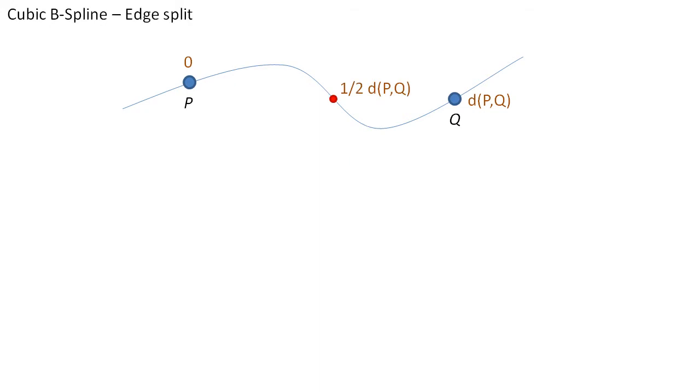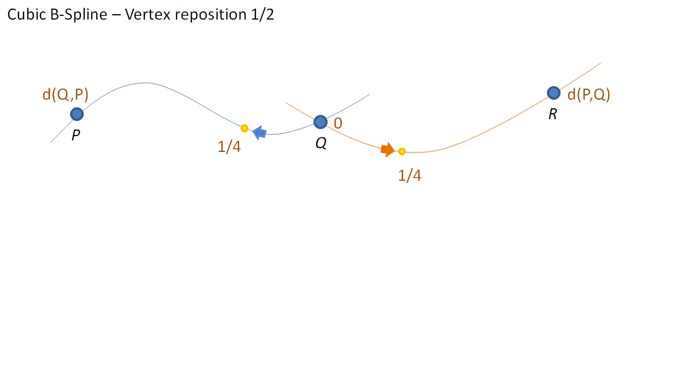Cubic B-spline subdivision consists of one mid-edge insertion and two vertex repositioning. This latter process requires the computation of three geodesics in the fashion indicated here.